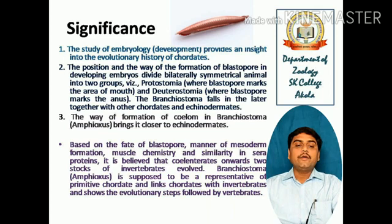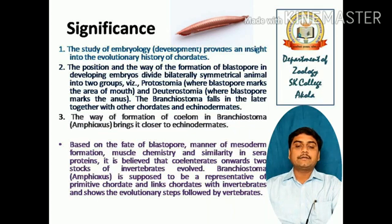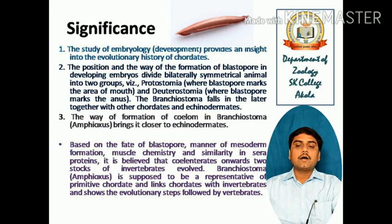Third, the way of formation of the coelom in Branchiostoma brings it closer to echinodermates. Based on the fate of the blastopore, manner of mesoderm formation, muscle chemistry, and similarity in serum proteins, it is believed that from coelenterates onwards two stalks of invertebrates evolved. Amphioxus is thus supposed to be a representative of a primitive chordate, linking chordates with invertebrates and showing the evolutionary steps followed by the vertebrates. This completes the process of blastulation, gastrulation, and three-germinal-layer formation with its significance in Branchiostoma or Amphioxus.